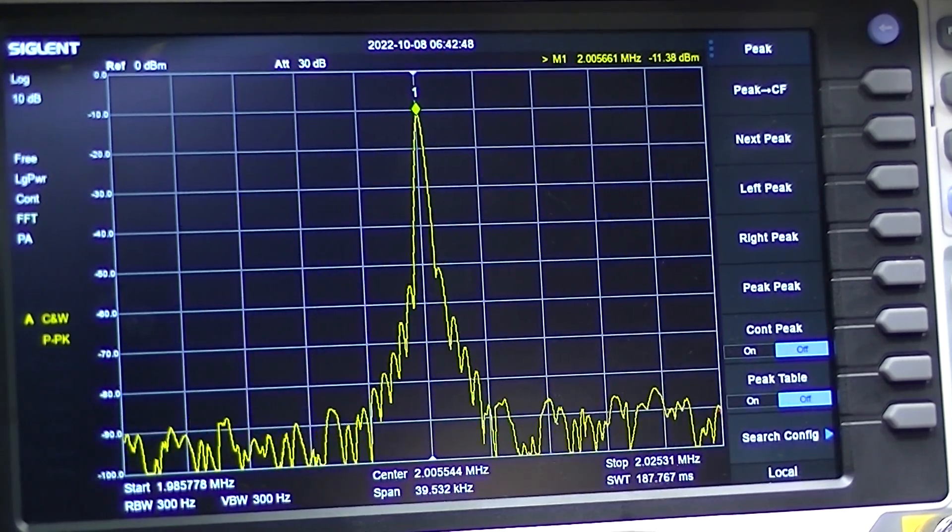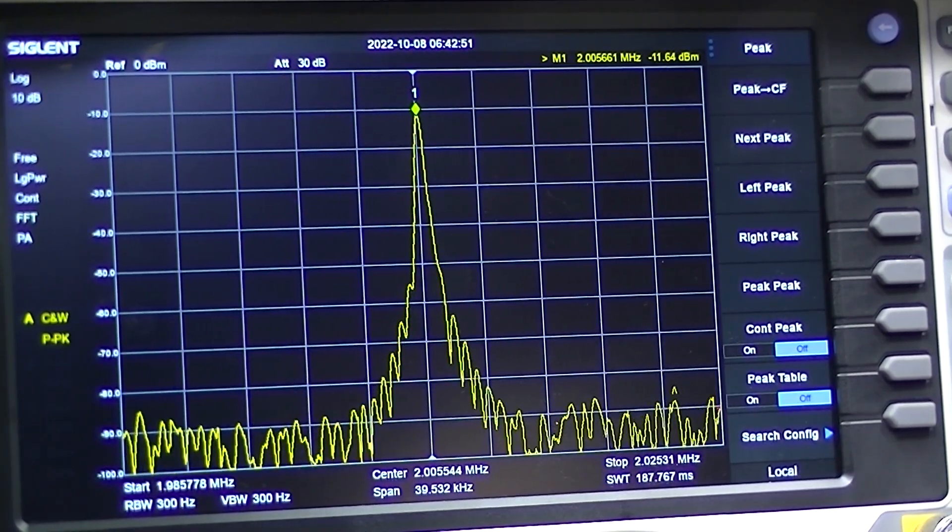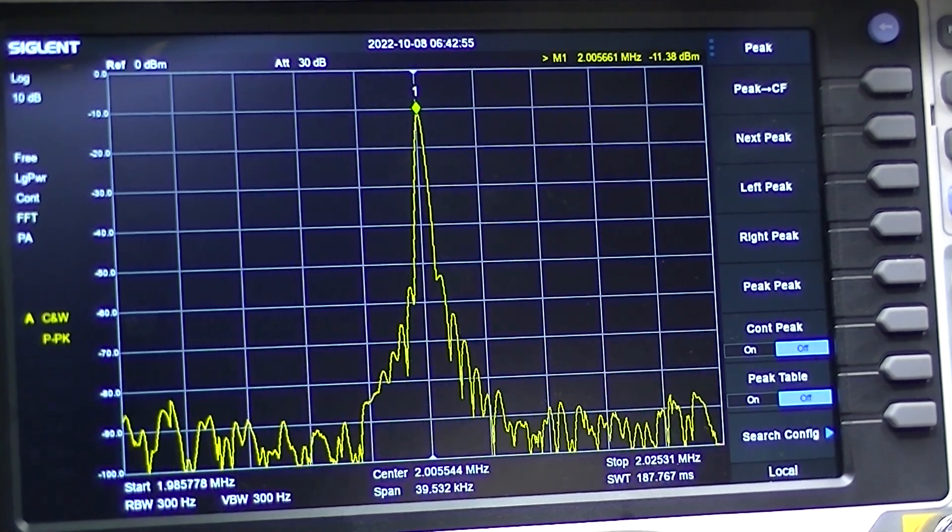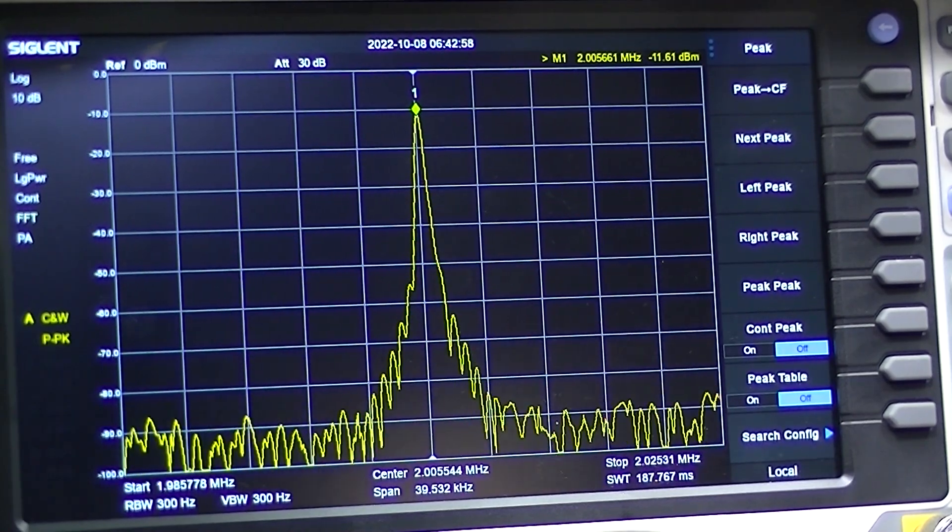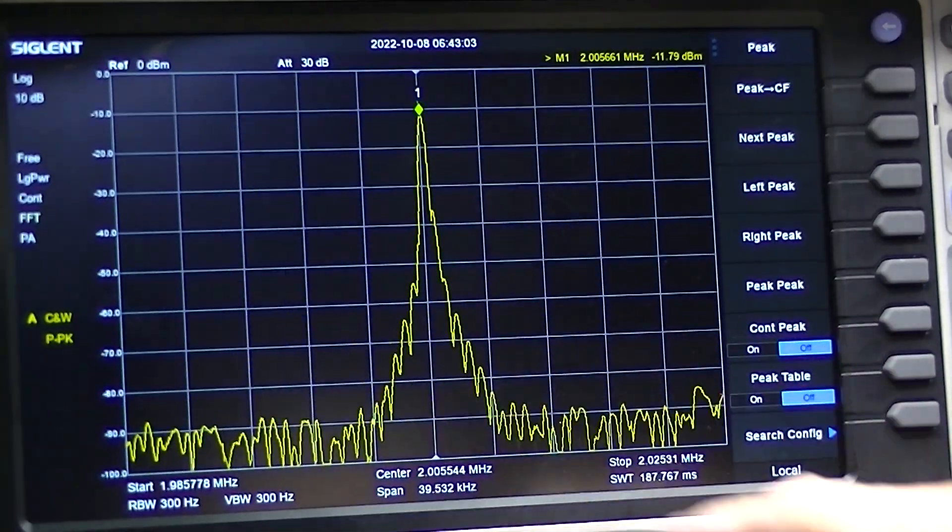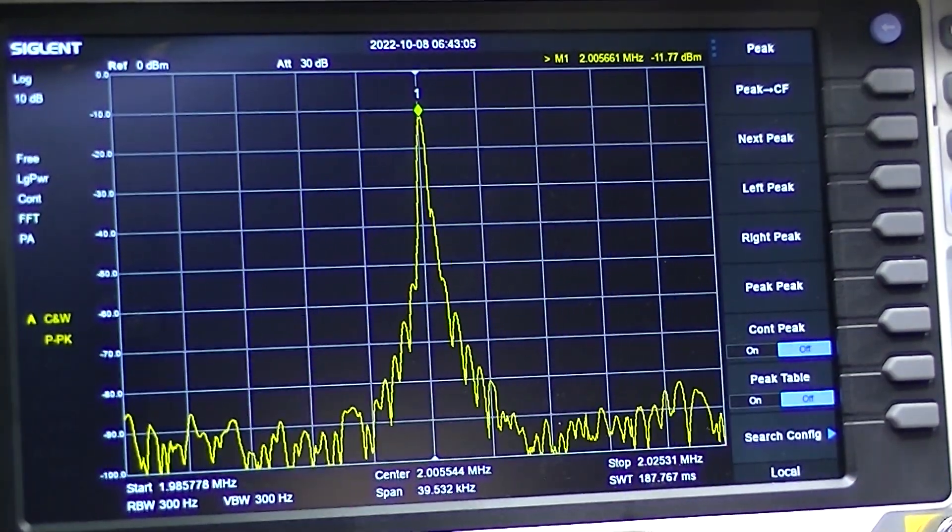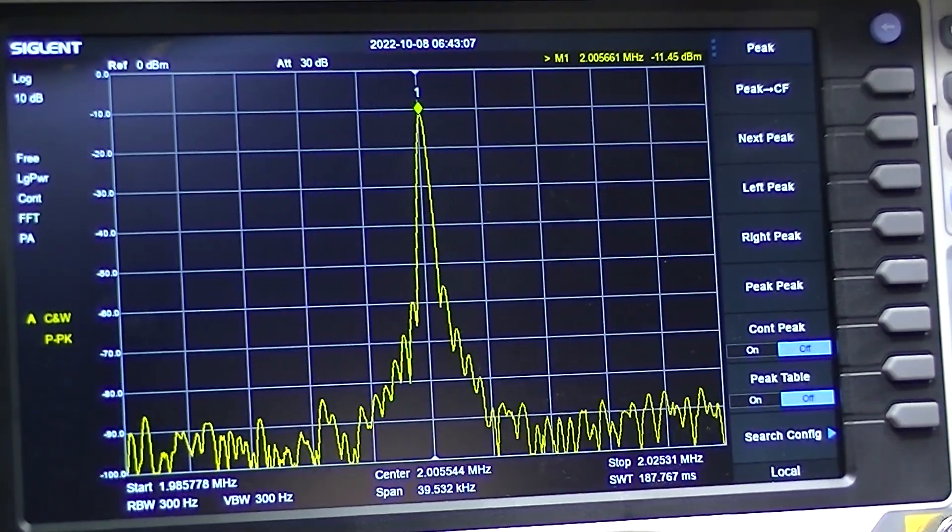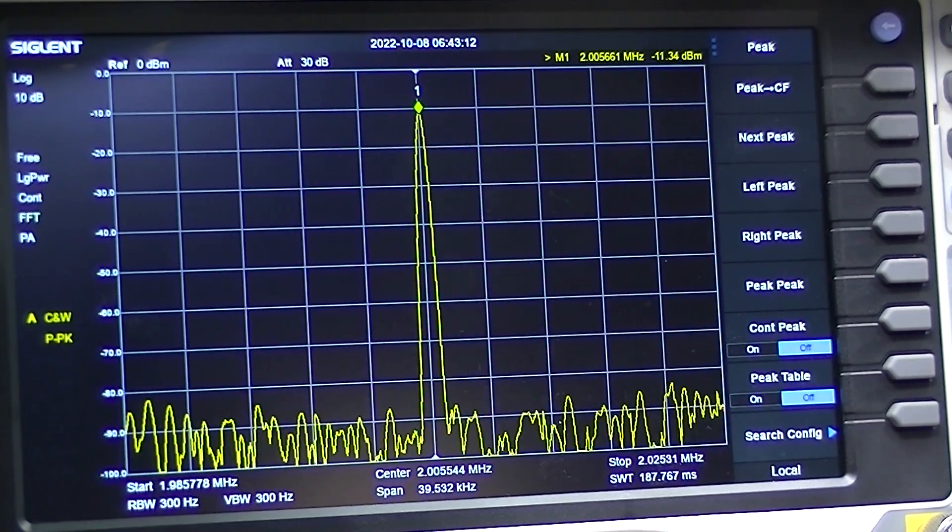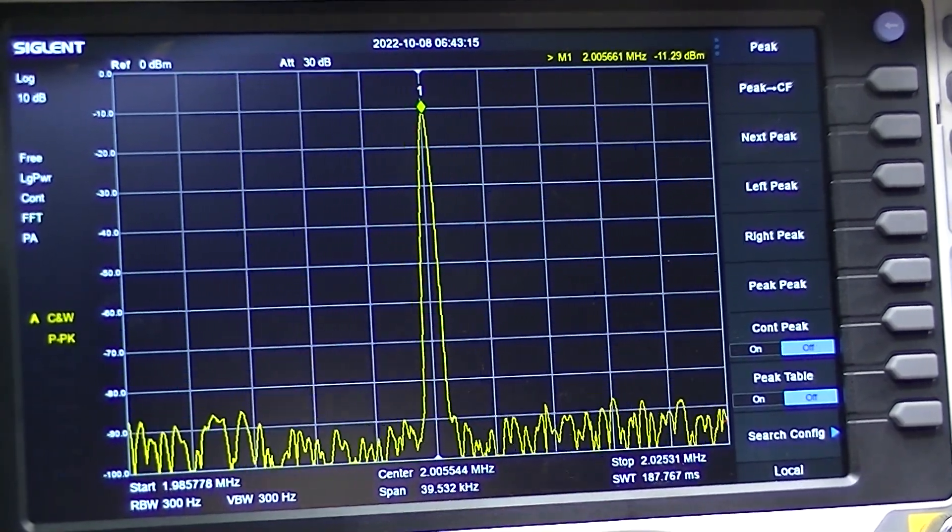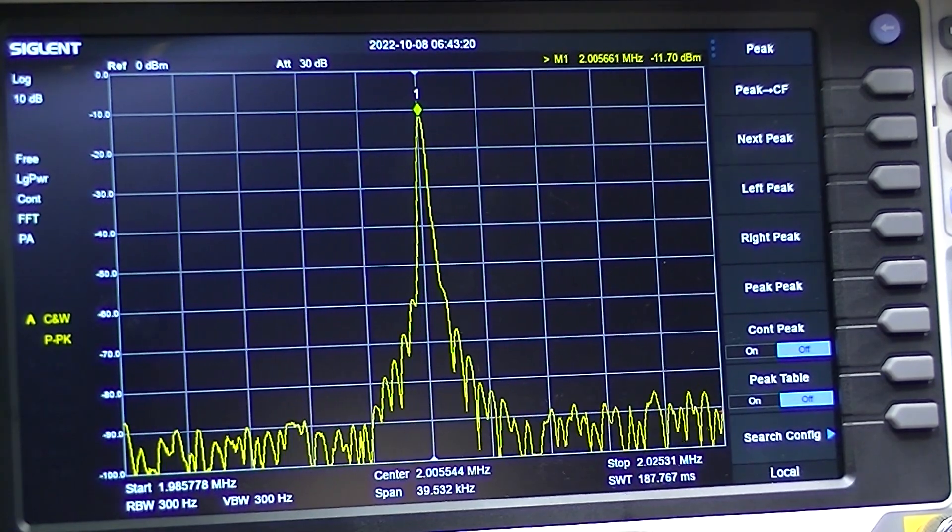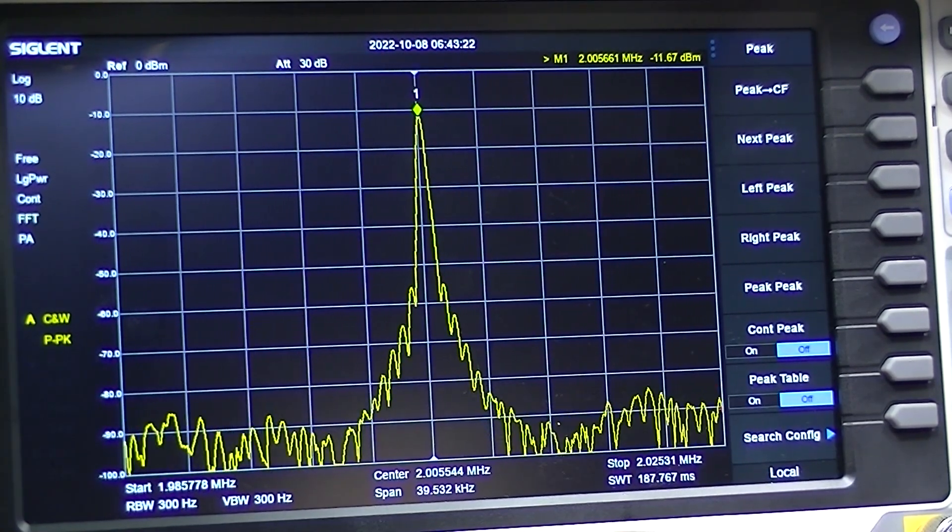Look at the spectrum analyzer, I've got marker number one set at the peak which is two point something. See these little things on the rising and falling edges? I'm going to turn down the percent of modulation and you see they begin to disappear until finally they're down in the dirt. They are the side bands created by the 400 cycle oscillator.